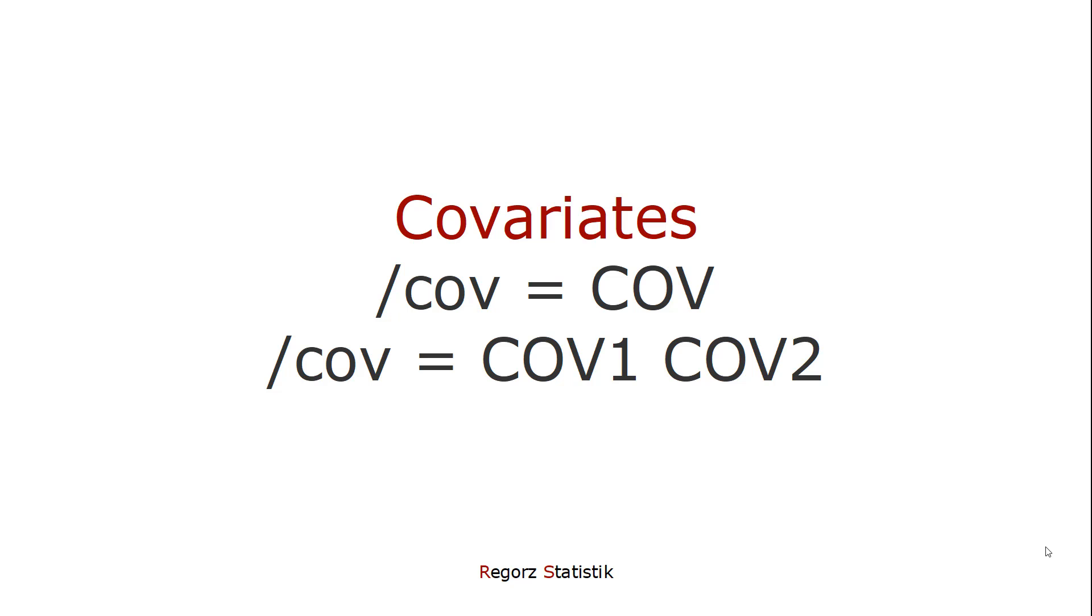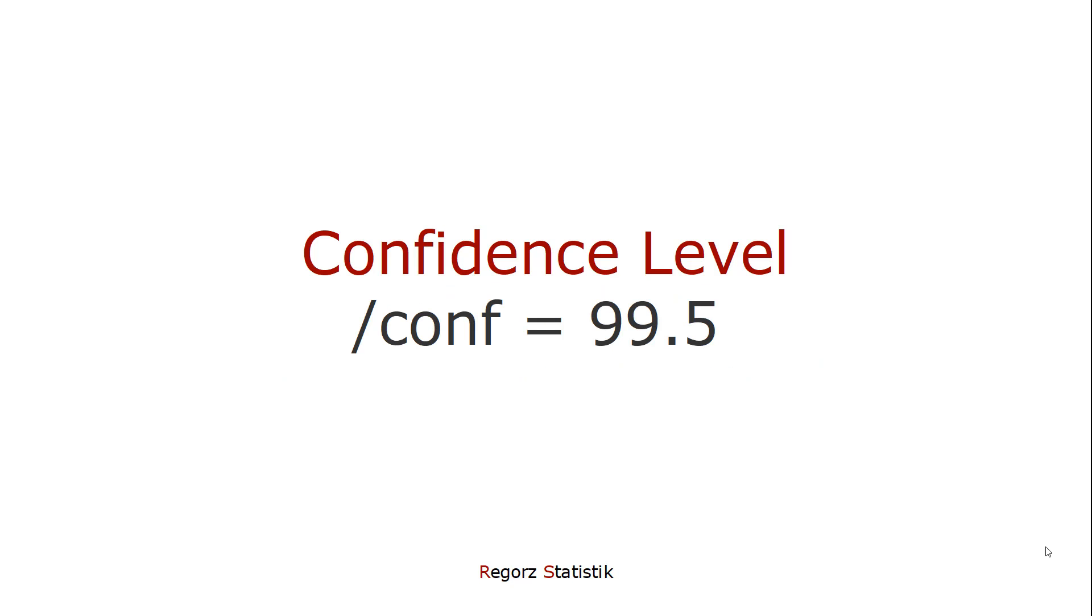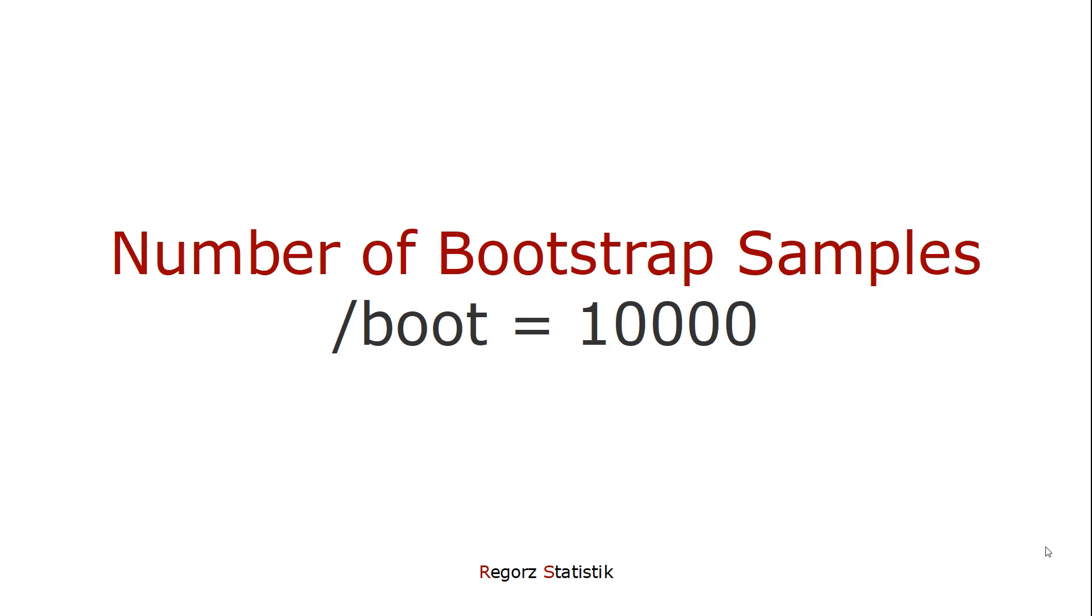You can include covariates with this command, and PROCESS calculates all regression models controlling for those covariates. You could change the confidence level for the confidence interval, for instance, if you use a Bonferroni correction. Then there are a number of options for bootstrapping.